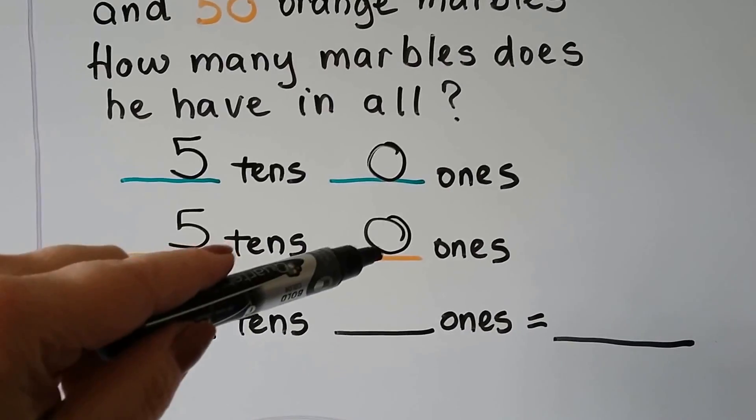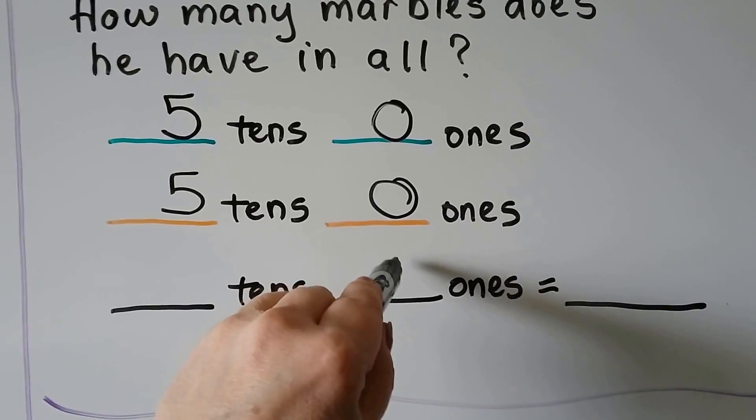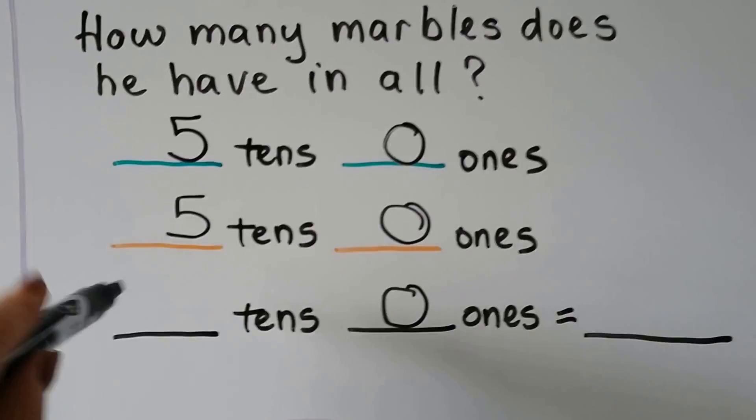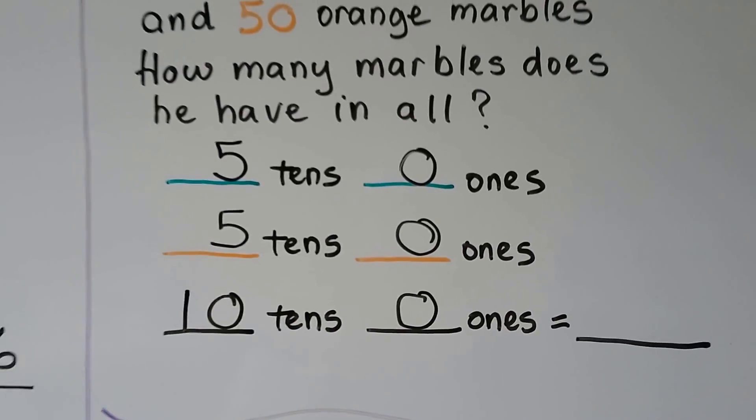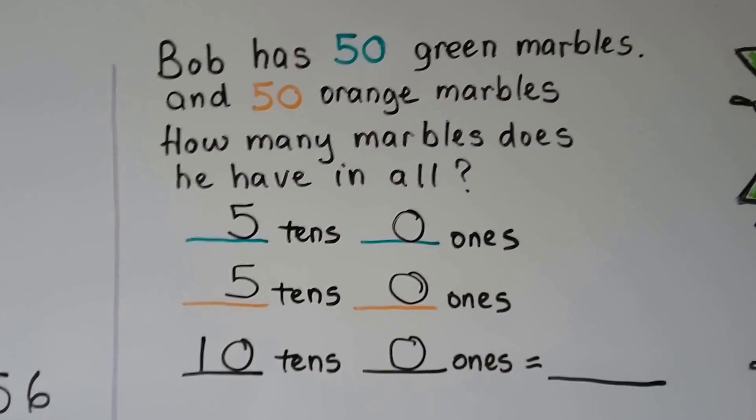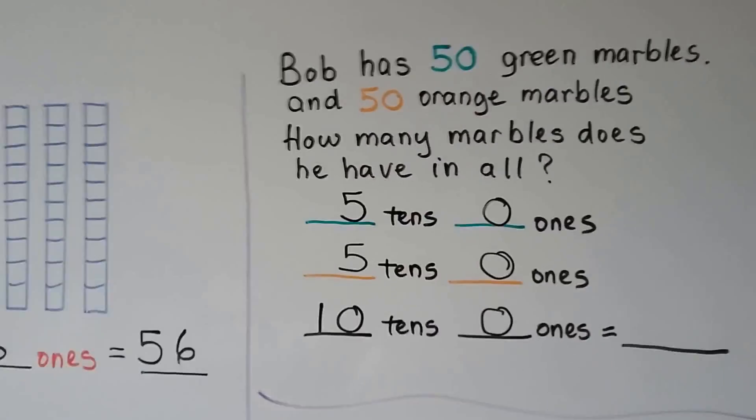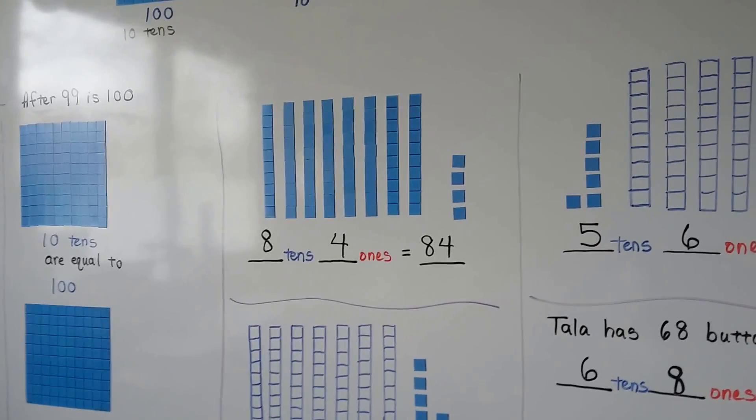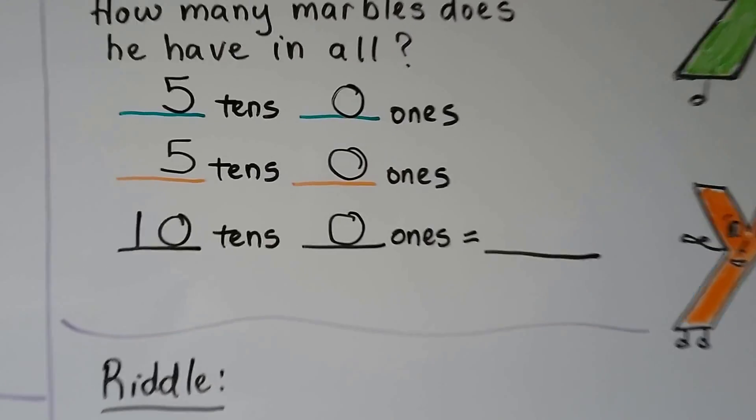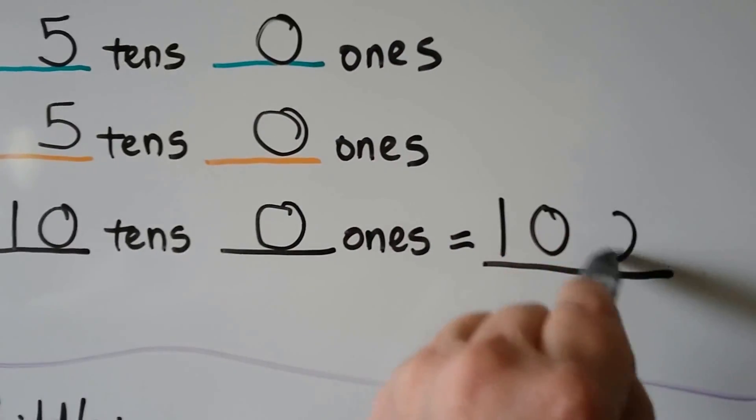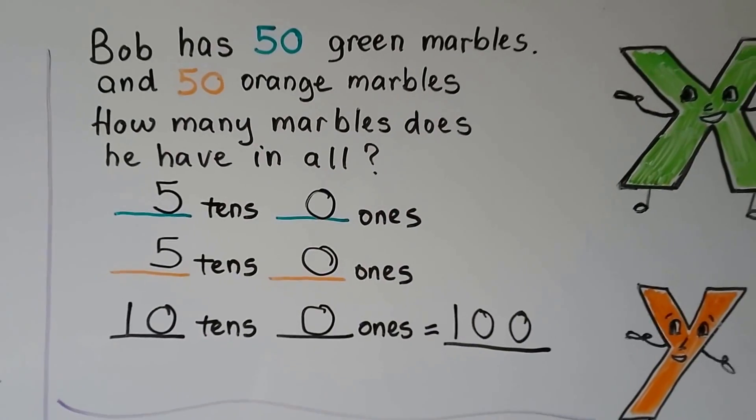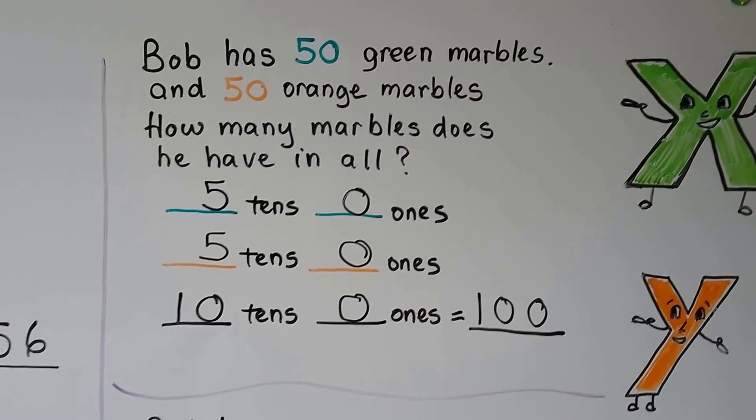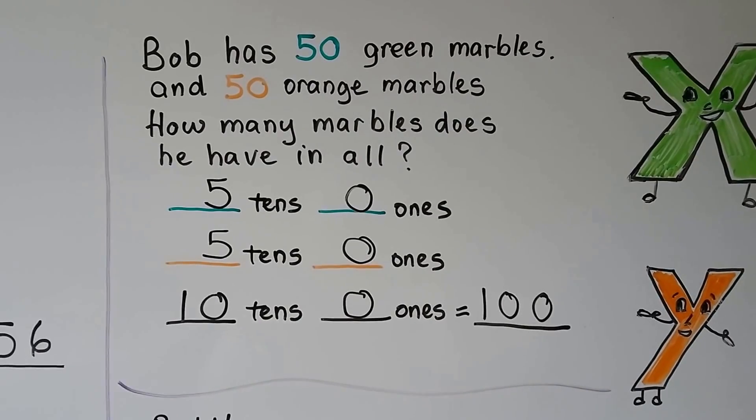We can add the ones, zero plus zero is equal to zero. We can add the tens, 5 tens and 5 tens is 10 tens. He has 10 tens and zero ones. And do you remember what 10 tens are equal to? Ten tens are equal to 100. He has 100 marbles in all. Fifty plus 50 is equal to 100. We added the tens together and there were no ones.